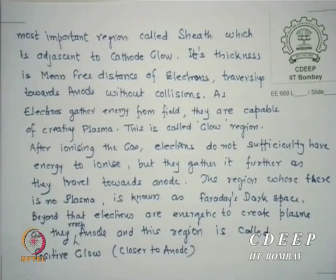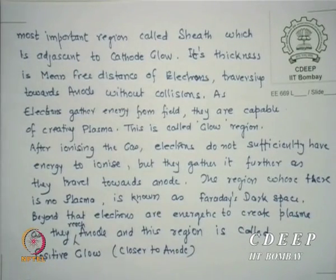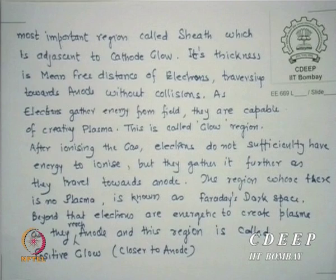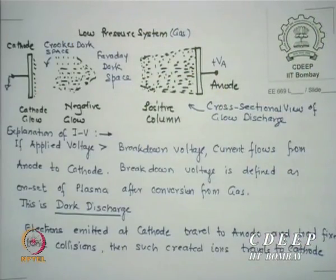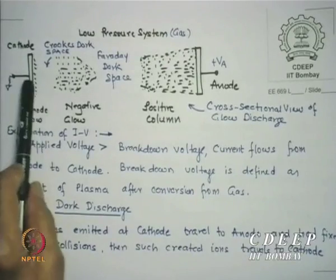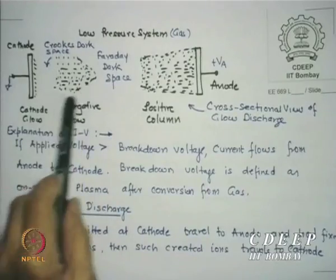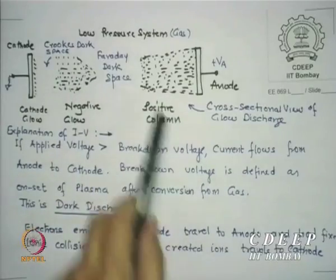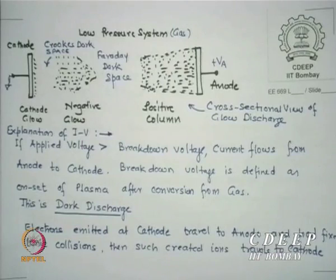The glow closer to the cathode is called negative glow, while the glow closer to the anode is called the positive column. The overall structure is: cathode → cathode glow → Crookes dark space (sheath) → negative glow → Faraday dark space → positive column → anode. This is a cross-sectional view of plasma in a glow discharge system.